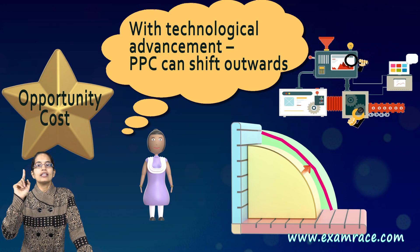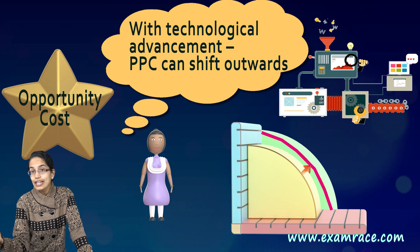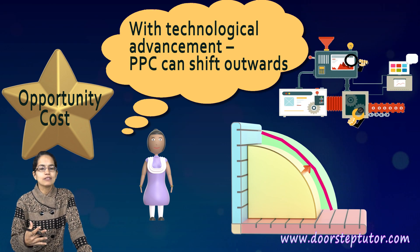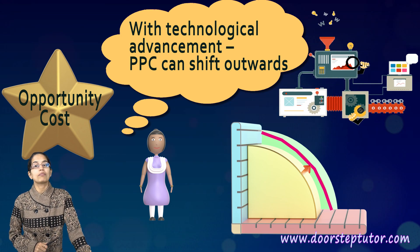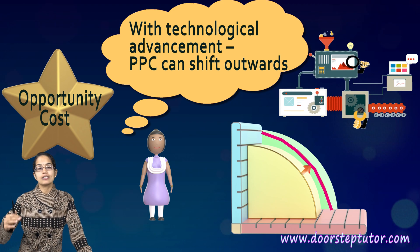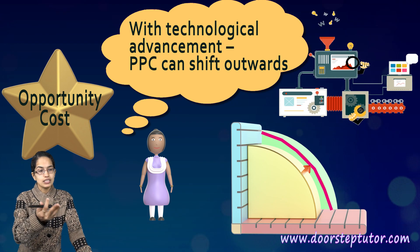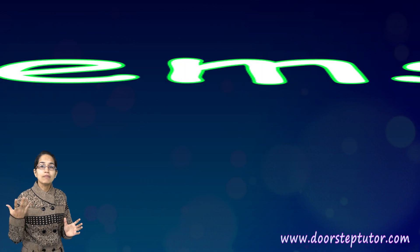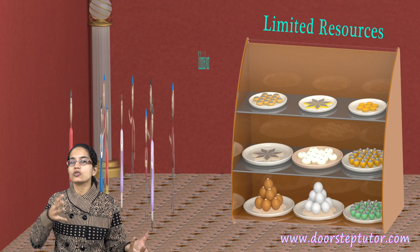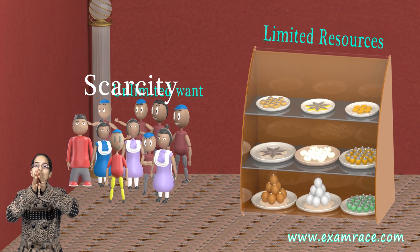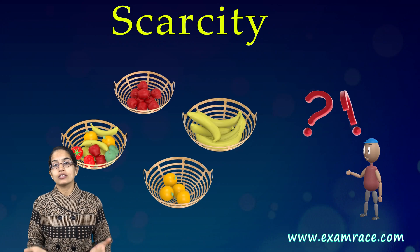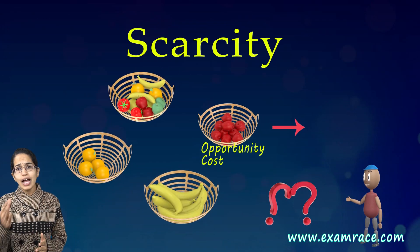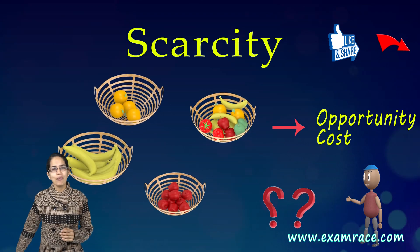With technological advancements, you can definitely shift your production possibility curve outward, allowing much higher production. This is the fundamental understanding of basic economic problems — limited resources and unlimited wants give rise to scarcity, scarcity creates choices, and choices lead to opportunity cost. We will be continuing with our sessions on economics. Stay tuned, and have a wonderful evening ahead.